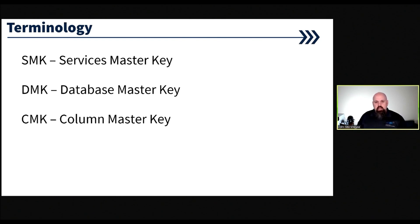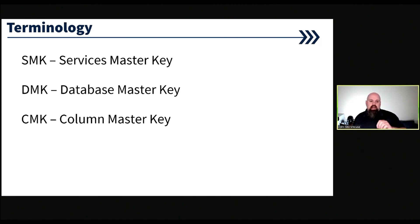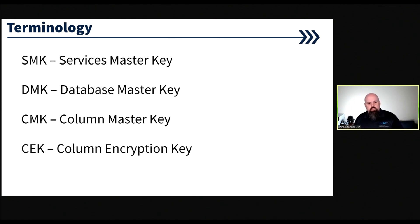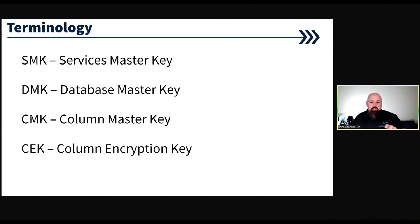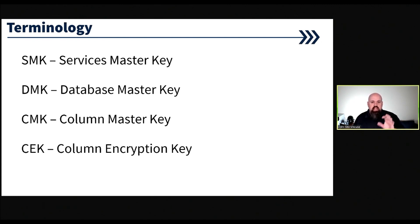The Column Master Key, or CMK, is going to be used with Always Encrypted. The Column Master Key will be generated within the table in the database, and then it will be used to encrypt the Column Encryption Key, or CEK. Those two components — the Column Master Key and the Column Encryption Key — will be used if you decide to deploy Always Encrypted. We can actually see them within the database, and I'll show you that in the demo. We'll stand up Always Encrypted along with TDE and column-level encryption so you can see how that works.